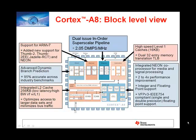It supports a standard 32-bit instruction set and the Thumb2 instruction set. Thumb2 is a mixed 16 and 32-bit instruction set, which provides better code density while maintaining 32-bit-like performance. The Cortex-A8 has a 13-stage execution pipeline and supports dual-fetch, dual-issue, and in-line execution.